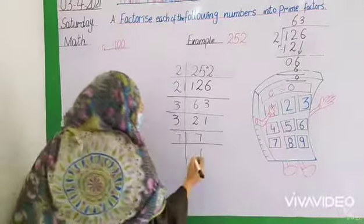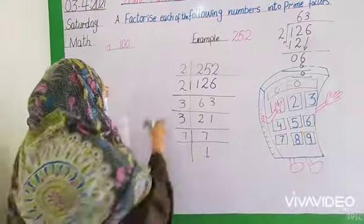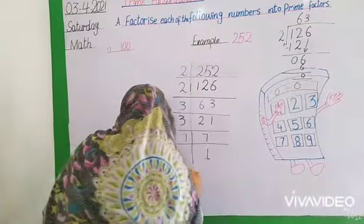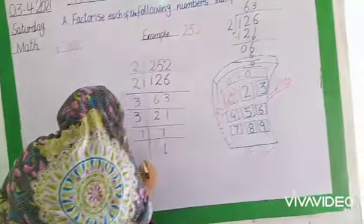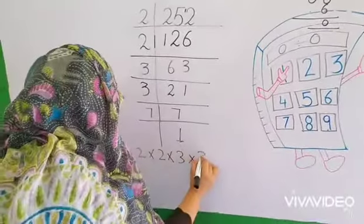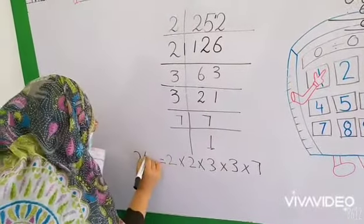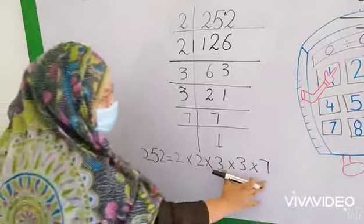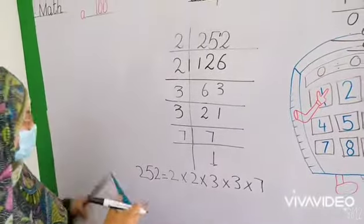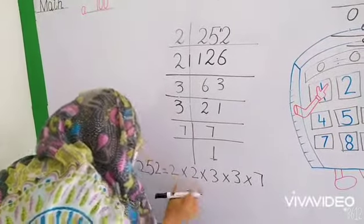Students, we will divide until we get 1. Now we will break it down. We will write 2, multiply by 2, multiply by 3, multiply by 3, multiply by 7. Now we will multiply to get the same answer, 252. We will do prime factorization. Now we will write this: 2 times 2.